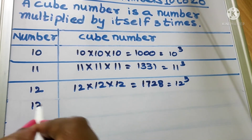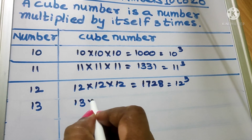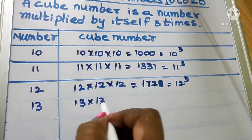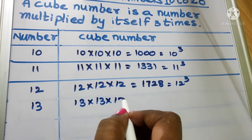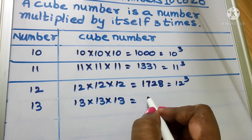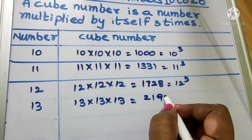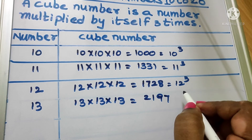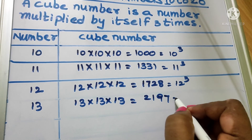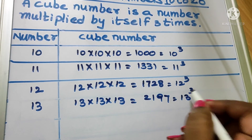Now, 13. 13 into 13 into 13 equal to 2197. We write as 13 cube.